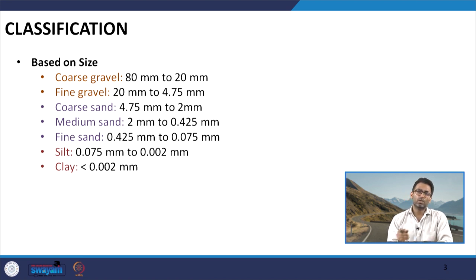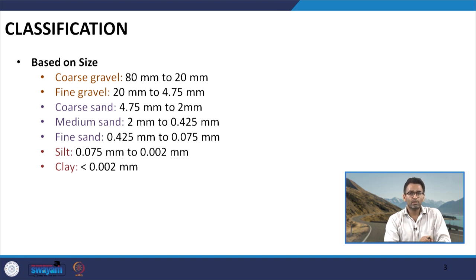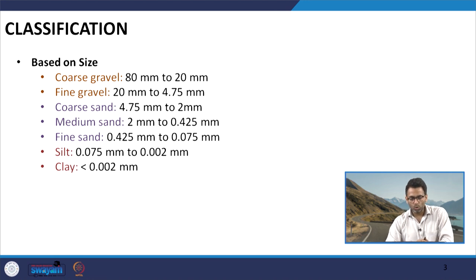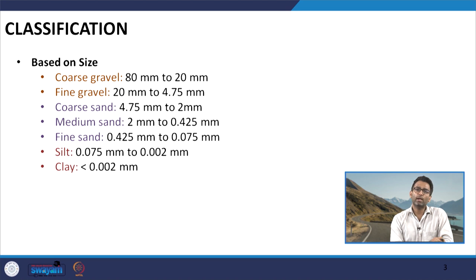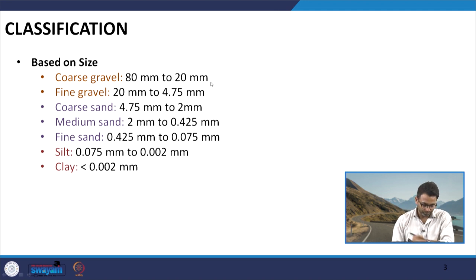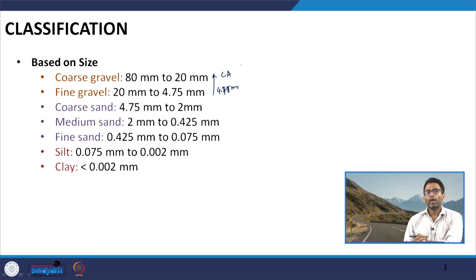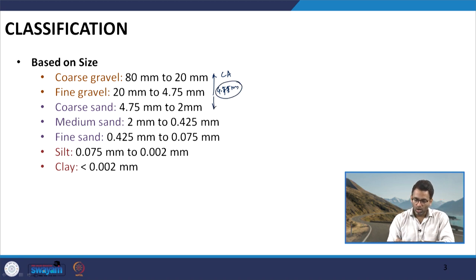Looking at the typical size distribution, aggregates can be categorized as coarse aggregates, sand, and fine aggregates. More precisely, we have coarse gravels ranging from 80 mm to 20 mm, and fine gravels ranging from 20 mm to 4.75 mm. Materials larger than 4.75 mm are coarse aggregates, and materials passing 4.75 mm are fine aggregates.